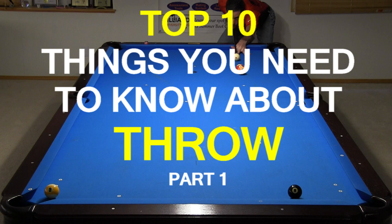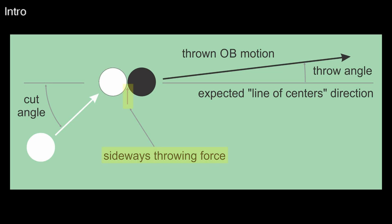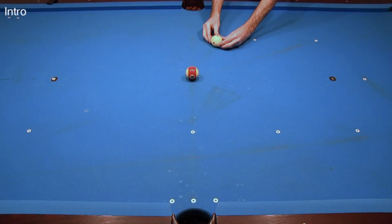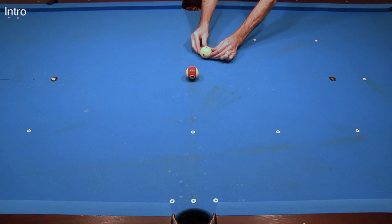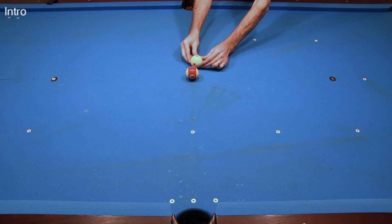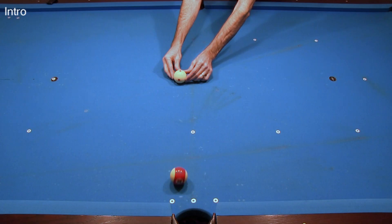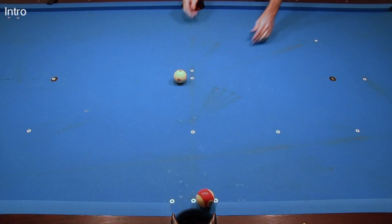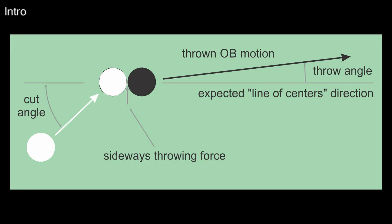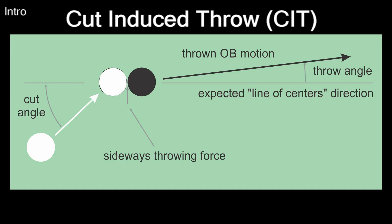Hi, Dr. Dave here. Do you know what throw is? It is caused by friction between the cue ball and object ball that pushes the object ball off the expected line-of-centers direction. When there is a cut angle, the cue ball rubs on the object ball during contact in the direction of motion, causing the object ball to head offline. In this case, the throw is called cut-induced throw, or CIT.